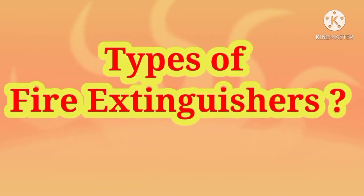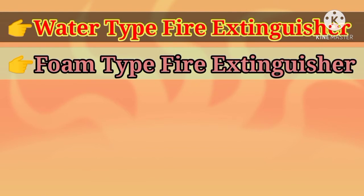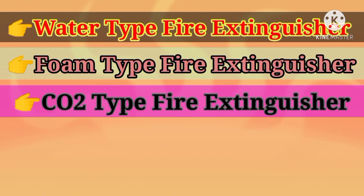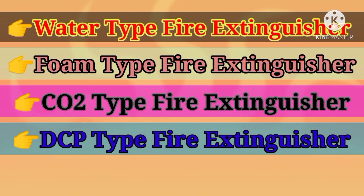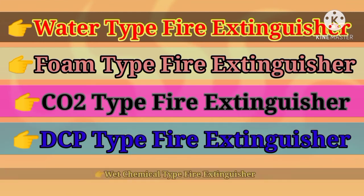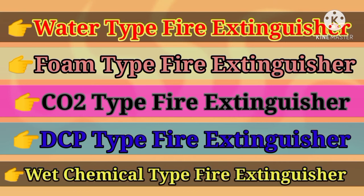Let's see the types of fire extinguishers. There are different types of fire extinguishers according to fire classes. These are: water type fire extinguisher, foam type fire extinguisher, CO2 type fire extinguisher, DCP type fire extinguisher, and wet chemical type fire extinguisher. Remember that all portable fire extinguishers are used only in the initial stage of fire.